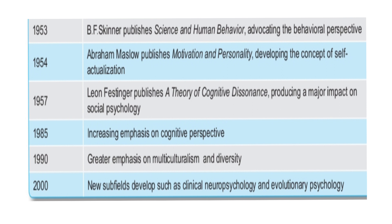In 1953, B.F. Skinner published Science and Human Behavior, advocating the behavioral perspective. In 1954, Abraham Maslow published Motivation and Personality, developing the concept of self-actualization — the topmost level in Maslow's hierarchy of needs, starting from basic needs up to self-actualization. In 1957, Leon Festinger published A Theory of Cognitive Dissonance, which had a major impact on the development of social psychology.